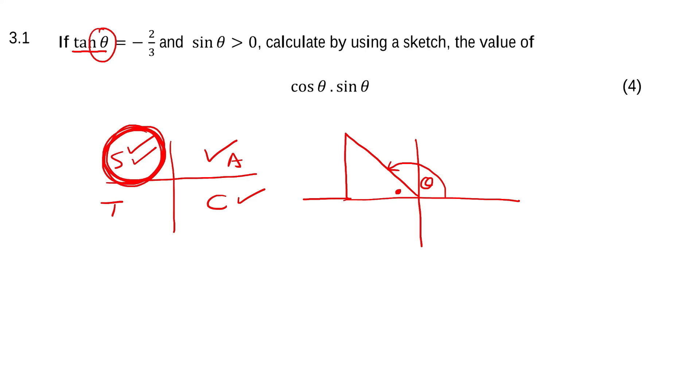Now tan, we know from SOHCAHTOA, is the opposite over the adjacent. So I'm going to put a 2 for the opposite and a 3 for the adjacent.